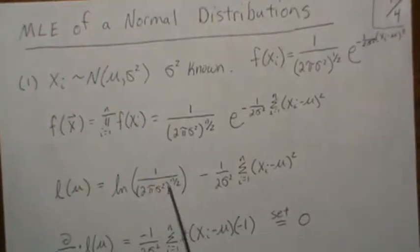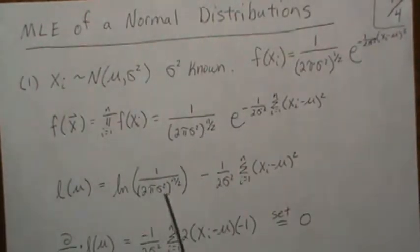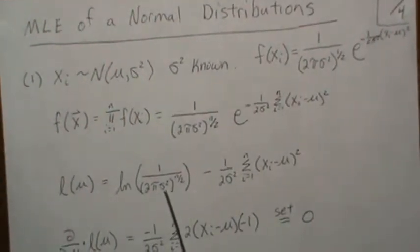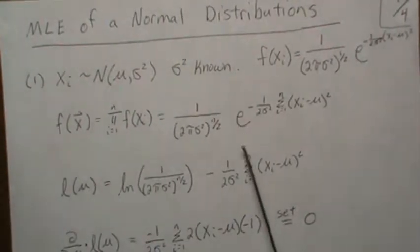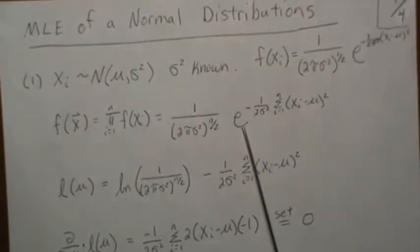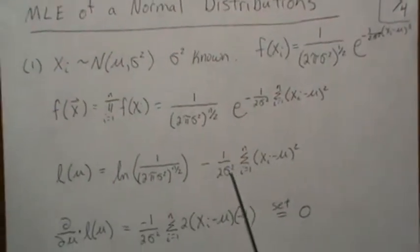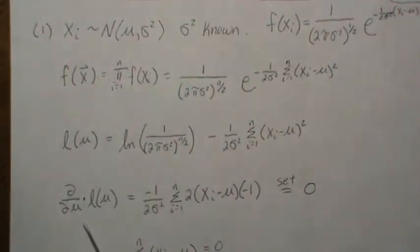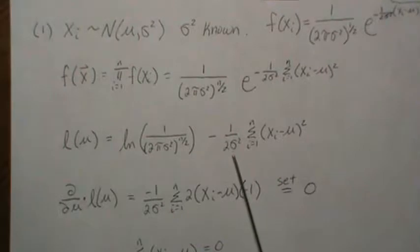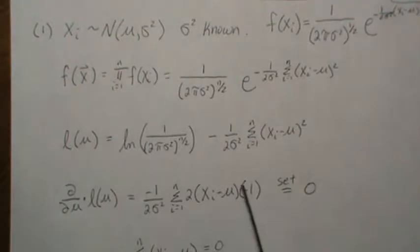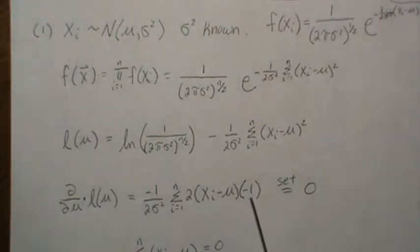We lump constants together since they don't affect maximization, and we don't need to maximize with respect to σ² because it's known. Taking the log of the likelihood, the exponential and log cancel and we're left with the sum term. When we take the partial derivative with respect to μ, the constant terms go to zero and we apply the power rule, decreasing the exponent and taking the inner derivative which is minus one.